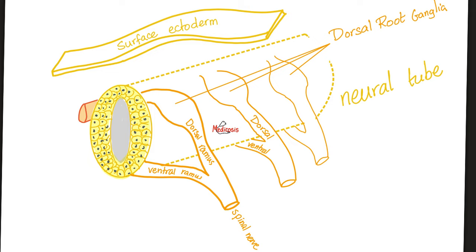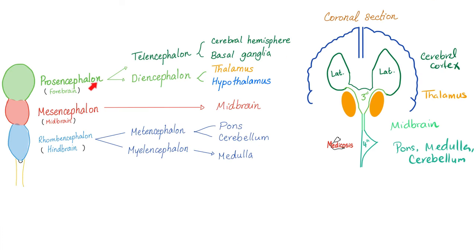Medicine makes so much sense once you understand it. Here is the brain: prosencephalon, mesencephalon, rhombencephalon. Inside, you have cerebrospinal fluid in cavities called ventricles. CSF is made in the lateral ventricles by the ependymal cells of the choroid plexus. CSF flows from the lateral ventricles into the third ventricle through the interventricular foramina of Monroe.